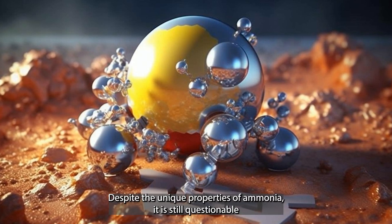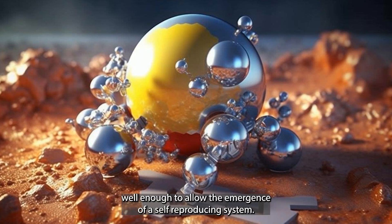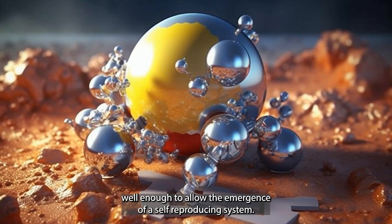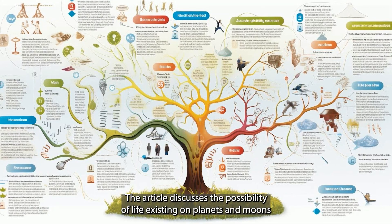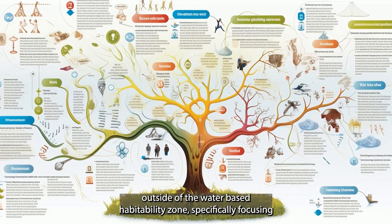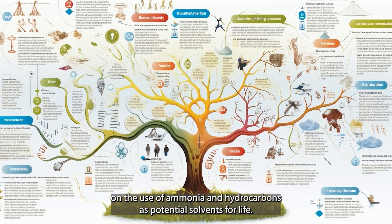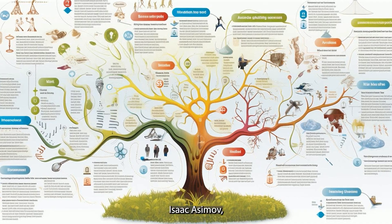Despite the unique properties of ammonia, it is still questionable if it could hold molecules together well enough to allow the emergence of a self-reproducing system. The article discusses the possibility of life existing on planets and moons outside of the water-based habitability zone, specifically focusing on the use of ammonia and hydrocarbons as potential solvents for life.